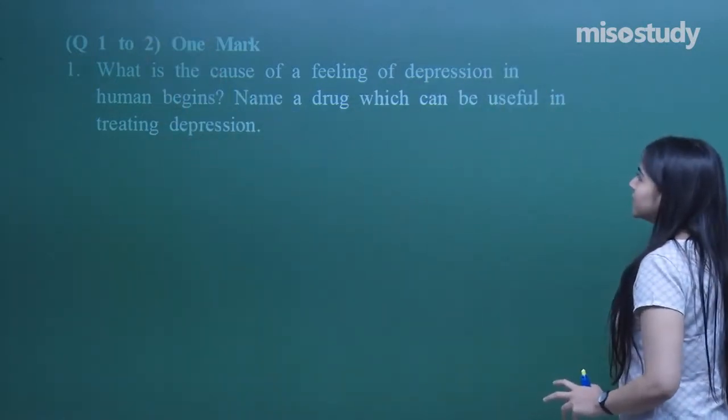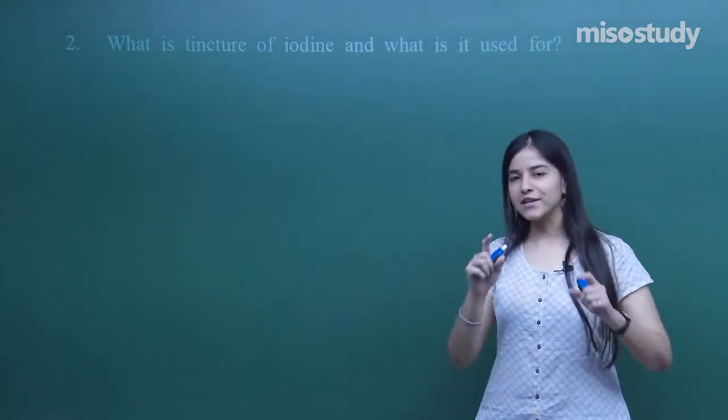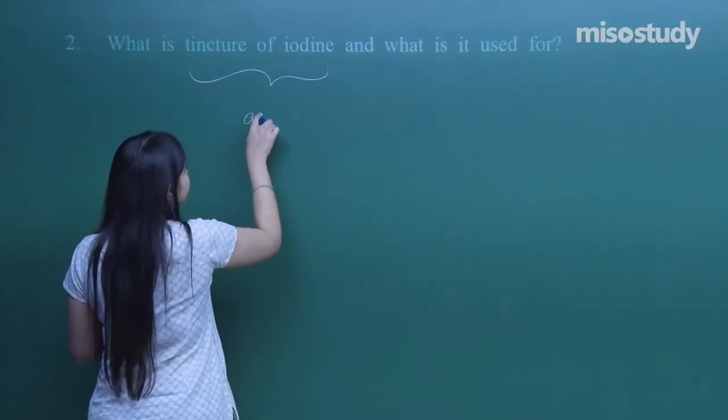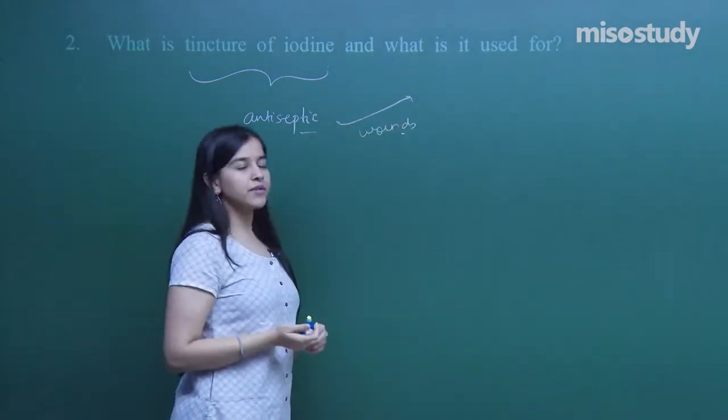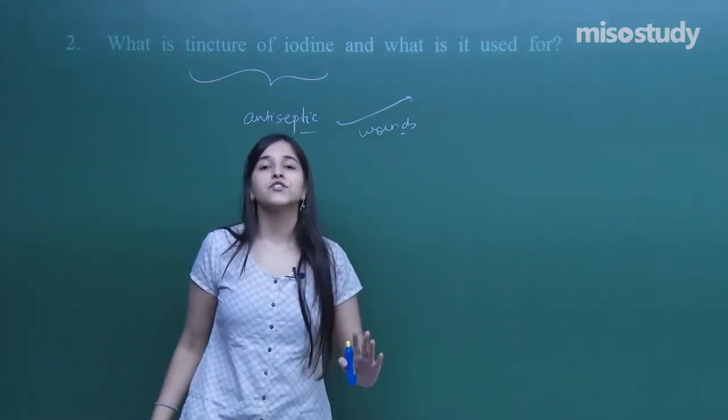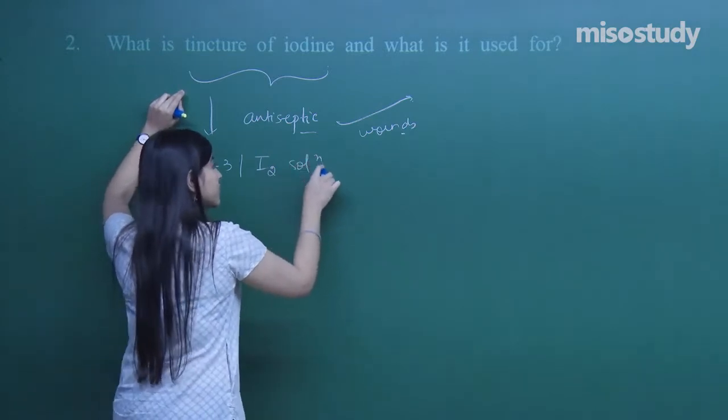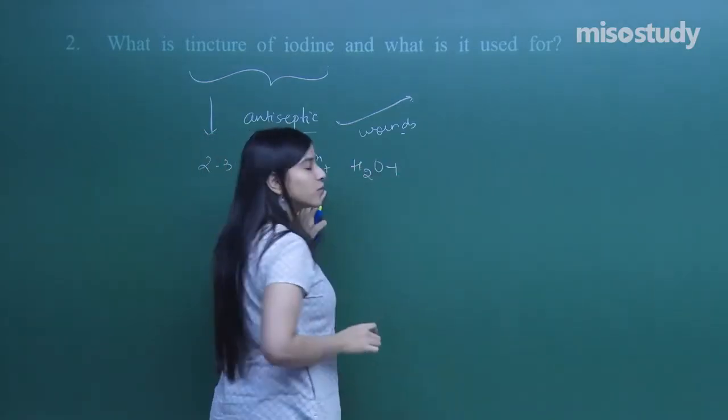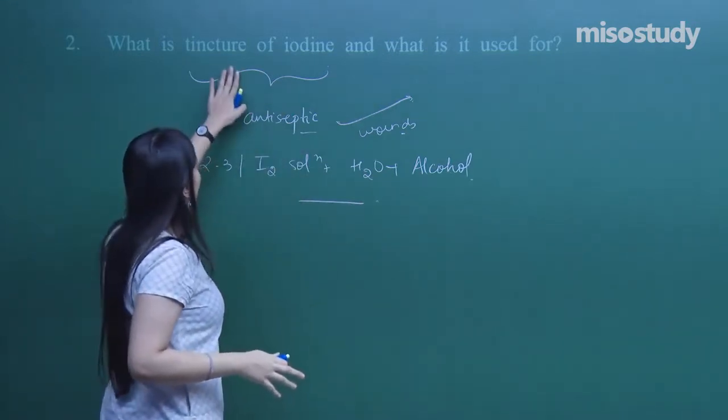The next question says, what is tincture of iodine and what is it used for? Tincture of iodine is an antiseptic used in treating the wounds, especially in post-operative and post-surgical procedures. It is 2 to 3 percent of iodine solution along with water and alcohol.